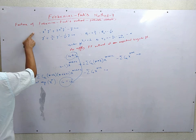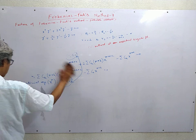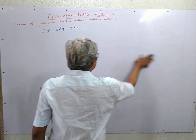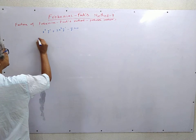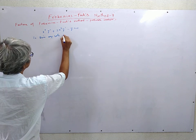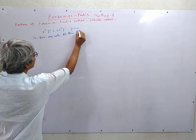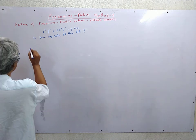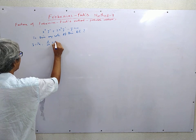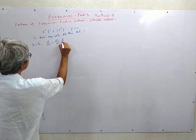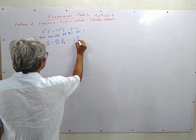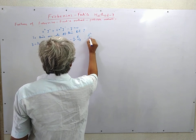The question now is: is there any solution to this differential equation, or is there no solution at all? To answer this, we make a change of variable: let z = 1/x. Then d/dx = (dz/dx)·(d/dz) = −(1/x²)·(d/dz).